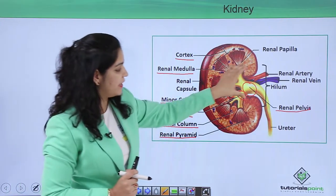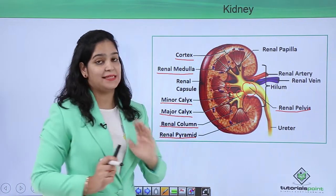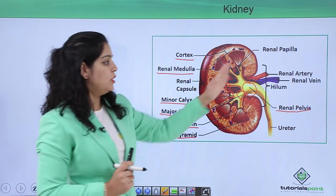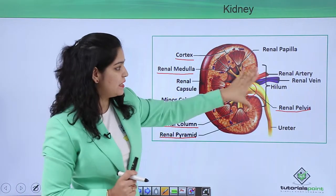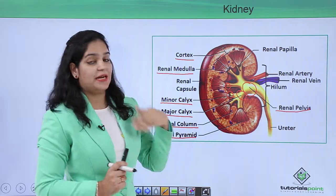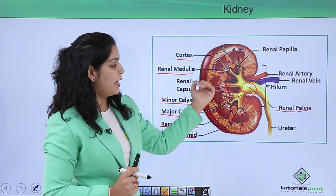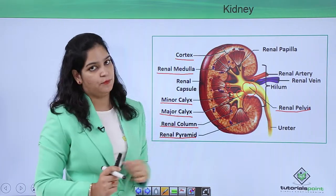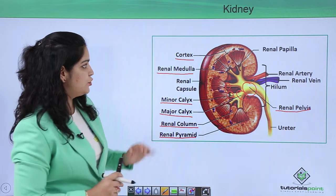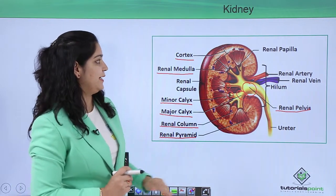The concave side or entrance point of the kidney is called the hilum, sometimes also called the hilus. This is the point from where different arteries, veins, and lymph vessels enter and move out from the kidney.